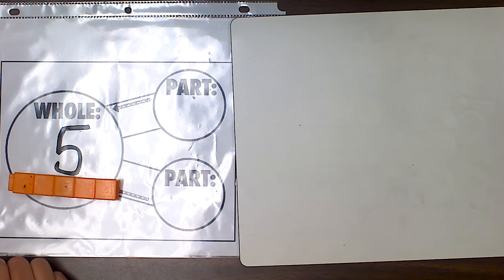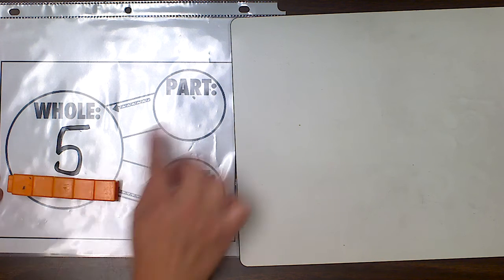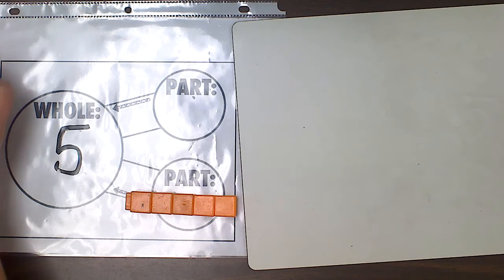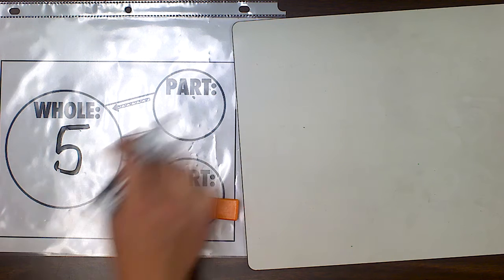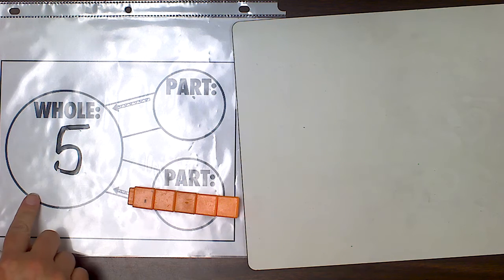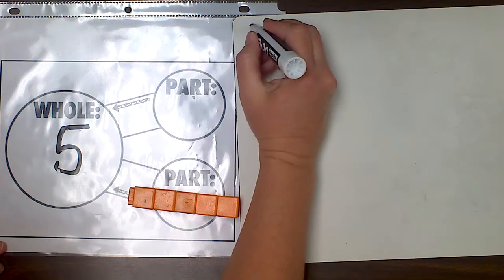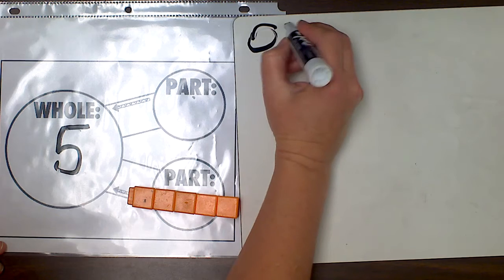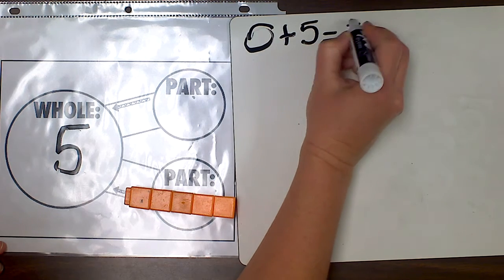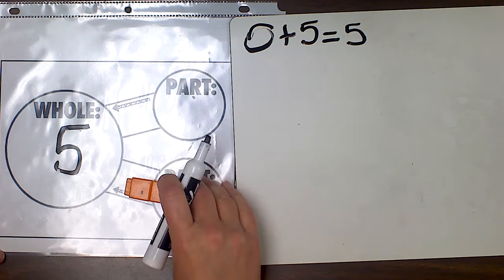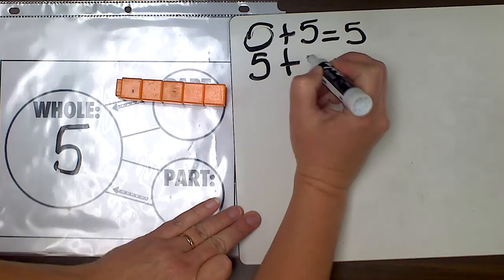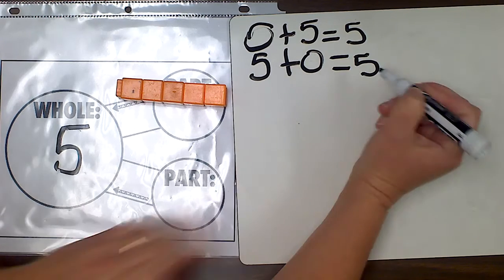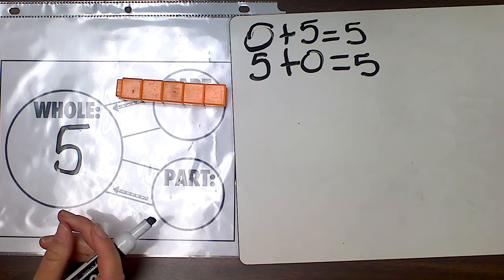We can also write number sentences that match each of these for addition and subtraction. Let's look at the first one: zero and five. My parts are zero and five, and my whole number is five. So I will add my parts together to make the whole number: zero plus five equals five. I could also say five plus zero equals five. Those are my two addition sentences for this number bond.